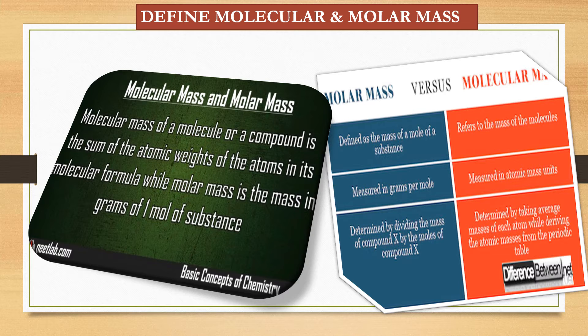Now, see, molar mass versus molecular mass. That means, difference. Molar mass defined as the mass of a mole of a substance. Molecular mass refers to the mass of the molecules. Molar mass is measured in grams per mole. Remember this, grams per mole. And, molecular mass is measured in atomic mass unit. Molar mass is determined by dividing the mass of compound by the moles of compound. And, molecular mass is determined by taking average masses of each atom while deriving the atomic masses from the periodic table.